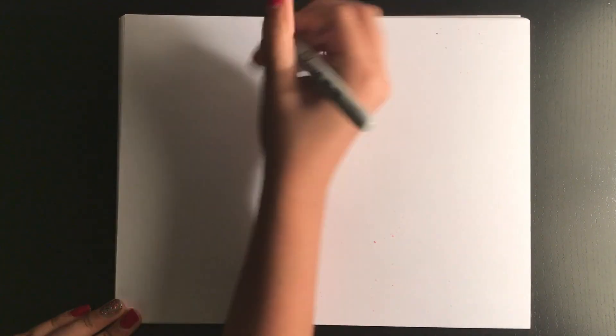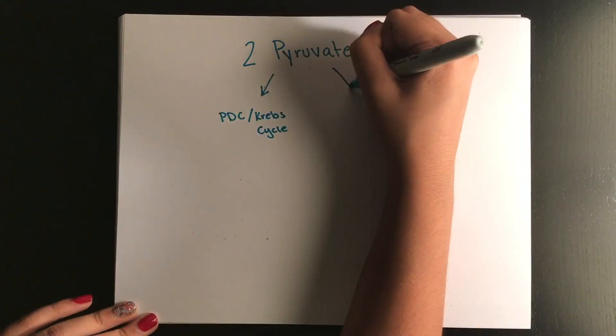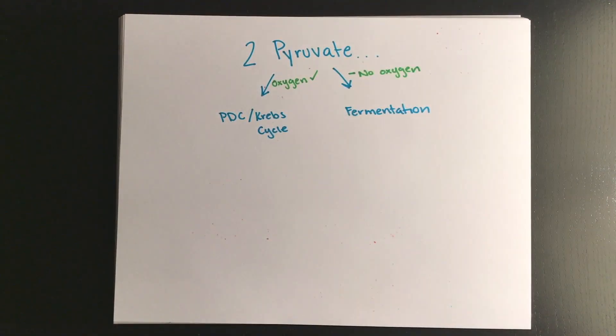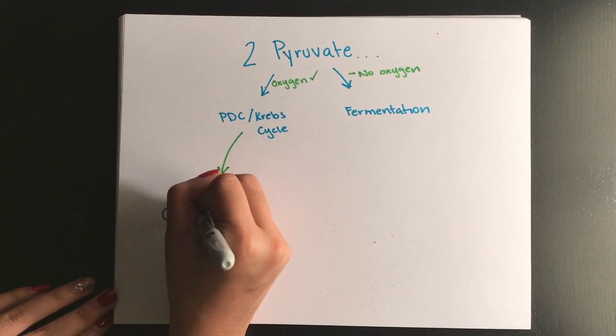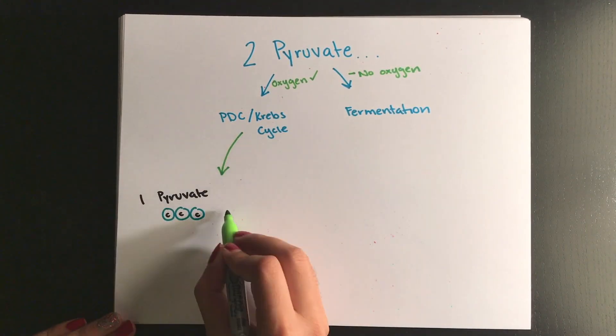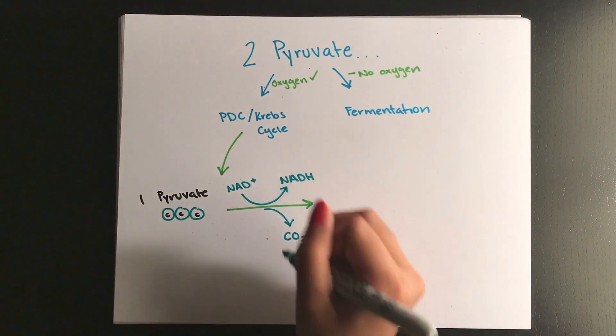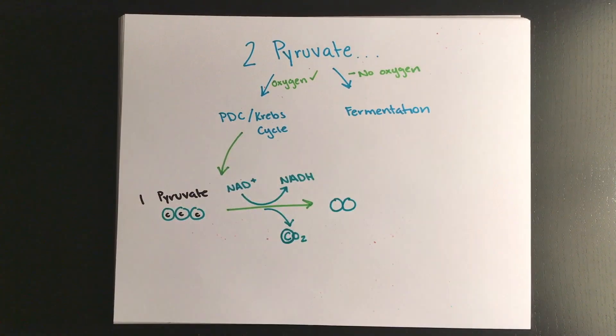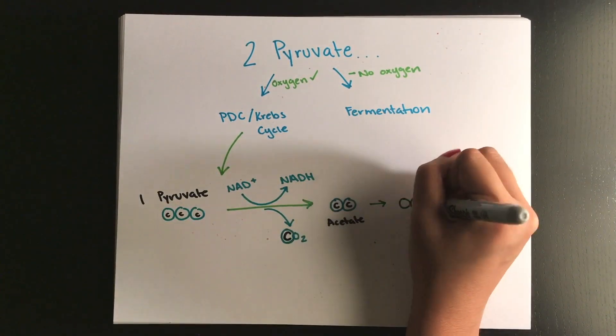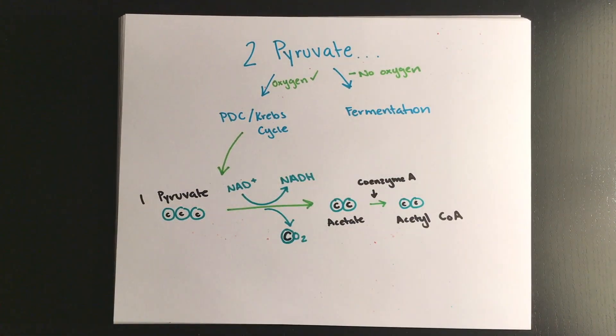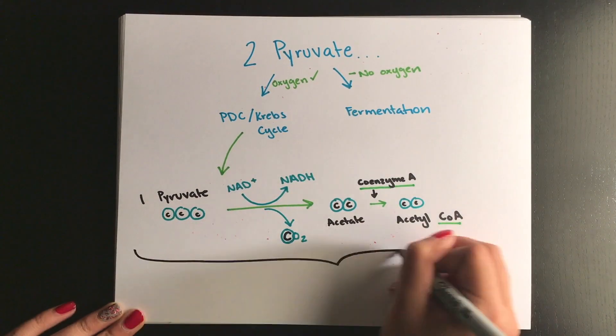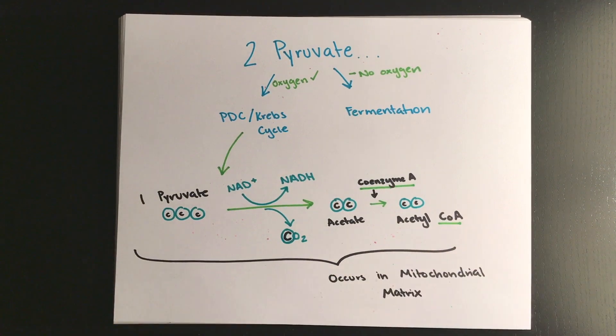The pyruvate made by glycolysis will then either go through the pyruvate dehydrogenase complex if it has oxygen or the fermentation process if it doesn't have oxygen. In the PDC, a group of enzymes prepare the pyruvate to enter the Krebs cycle and this is because the Krebs cycle can only use molecules with two carbon atoms but pyruvate right now has three. After removing one of the carbon atoms, PDC then attaches the remaining two carbon structure to coenzyme A and during this process another molecule of NADH is produced.